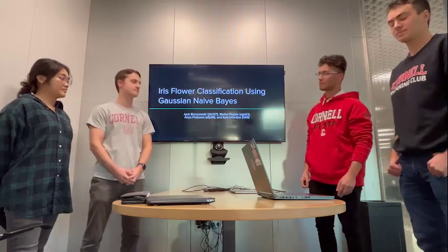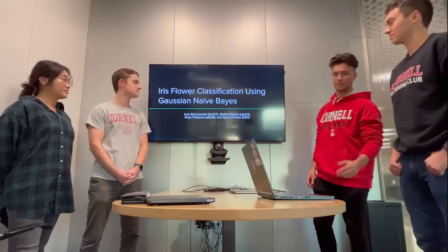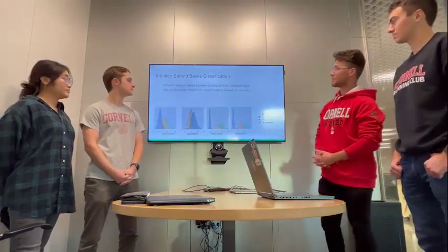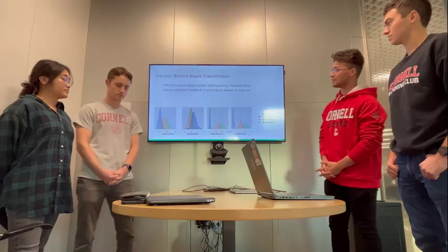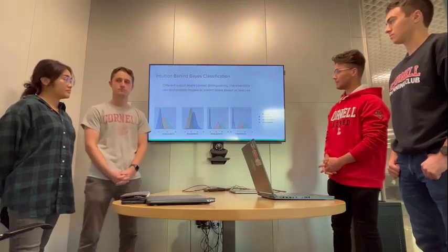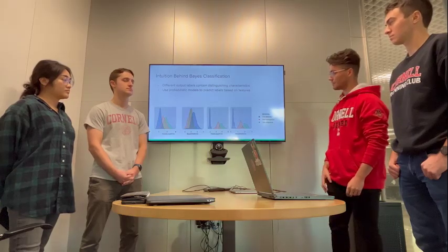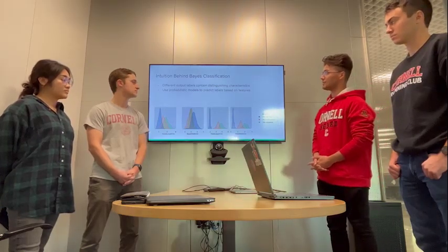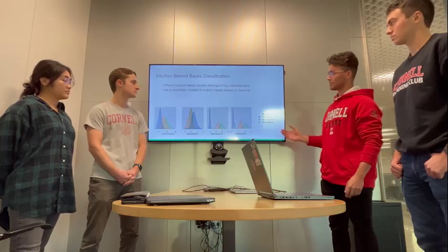Hi everybody. Welcome to our project on iris flower classification using Gaussian naive Bayes. To start, we want to give some intuition behind Bayes classification. The basic way it works is we use the implicit assumption that features exist on a Gaussian normal distribution, and that you can predict different output labels that contain distinguishing characteristics using those distributions.